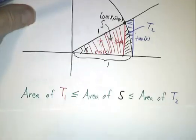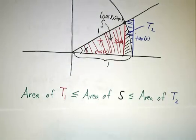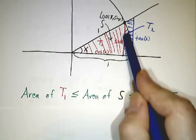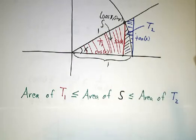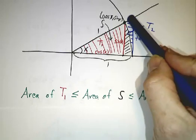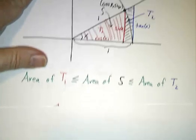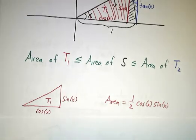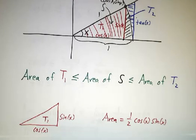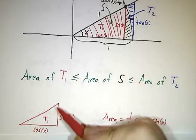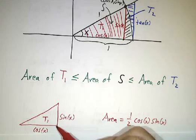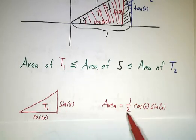We always have that the area of T1 is less than or equal to the area of the sector — because you had to add area to get the sector — which is less than or equal to the area of T2 — because you had to add more area to get T2. Triangle T1 has a base of cos(x) and a height of sin(x), so its area is one-half base times height, which is (1/2) cos(x) sin(x).